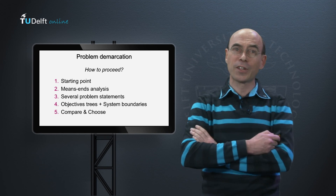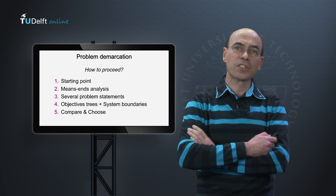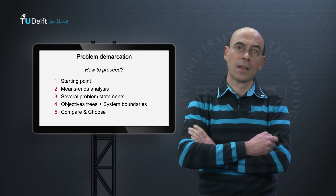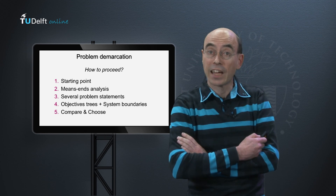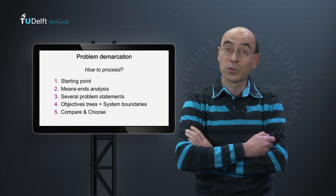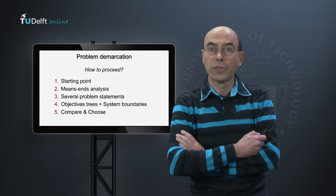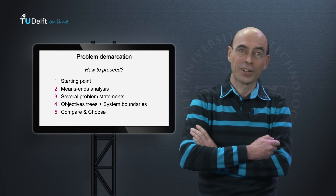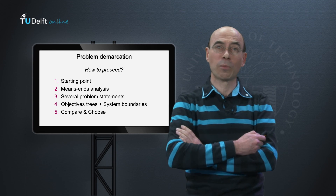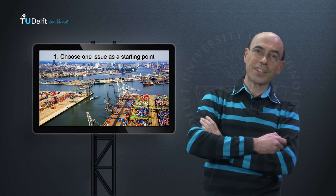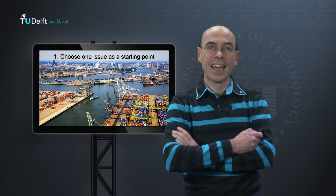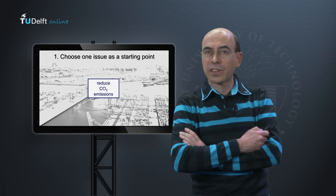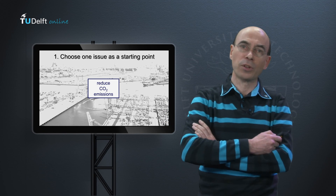As I explained in the first video, problem demarcation starts by choosing one issue that appears to be of immediate interest to your client. This issue becomes the starting point for means-ends analysis, which helps you to identify the related issues. Let us again assume that your client is the Port of Rotterdam, and that in your first talks it appears that the port is thinking about ways to reduce its emissions of carbon dioxide.